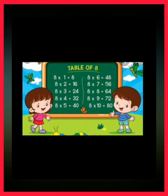Again we are going to read table of 8 from 6. 8 sixes are 48. 8 sevens are 56. 8 eights are 64. 8 nines are 72. 8 tens are 80.